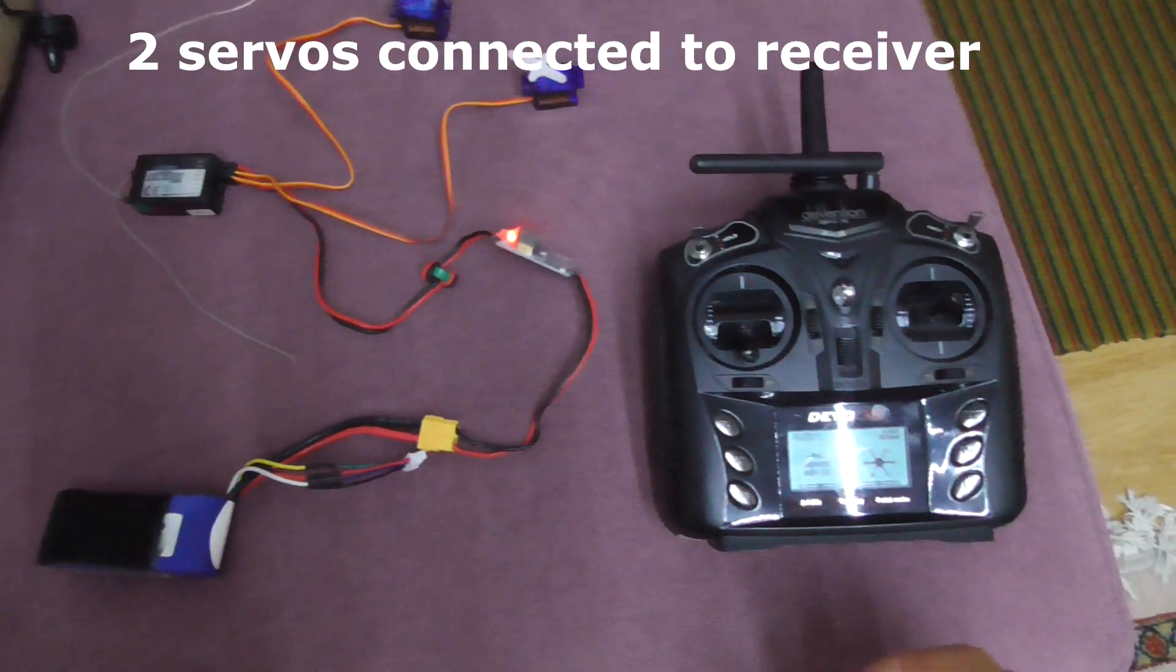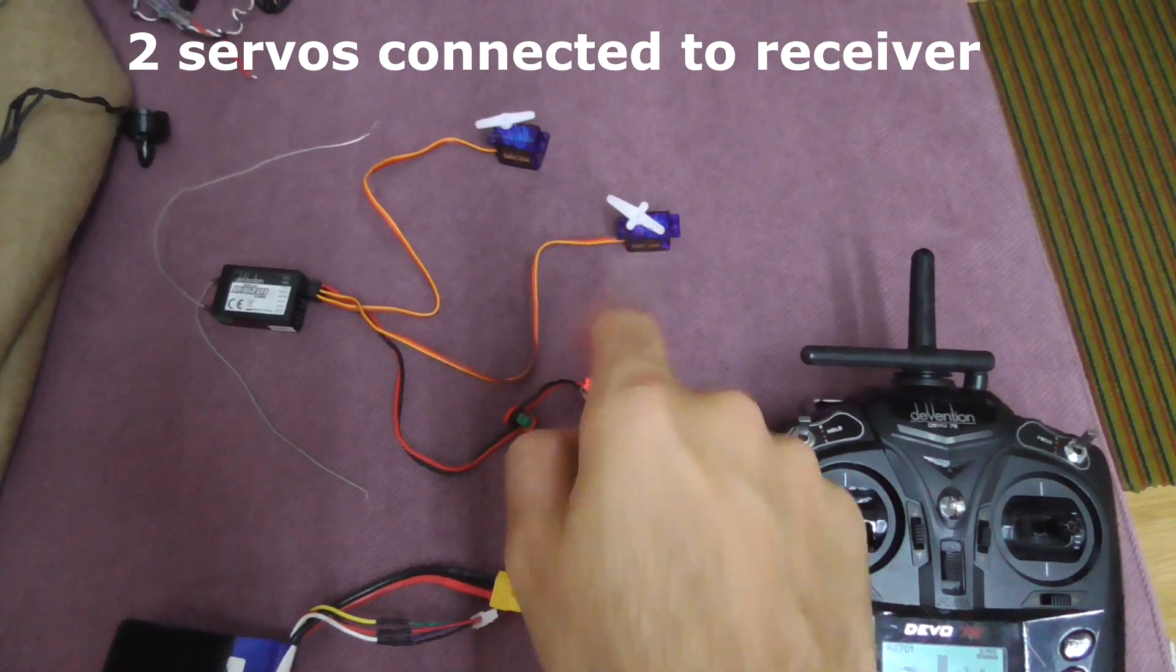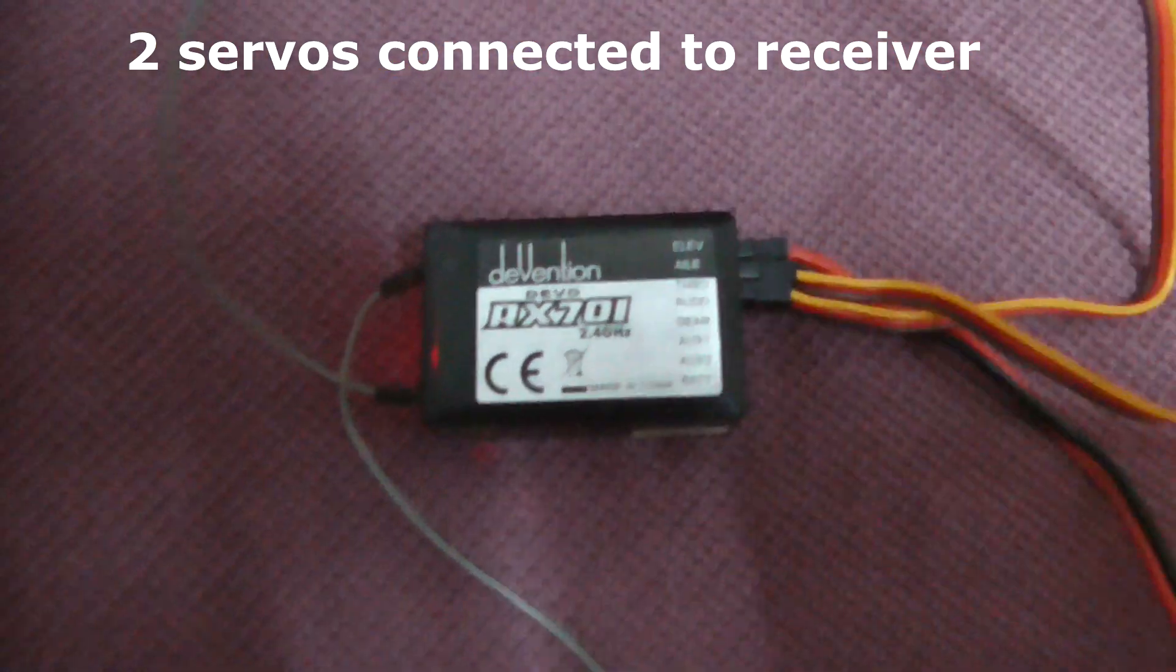Okay, now there are two servos. That one was connected to the aileron.